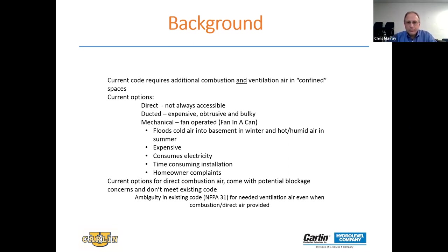Because of these requirements, we're looking at different options. One current option is to direct air to the outside. But how often is a boiler room on an outside wall with a window or opening to the outside? That's not always possible. Another option is ducting — you can always run a duct from an internal boiler room to the outside, but the ducting is bulky because it has to be proper size, and it's expensive.